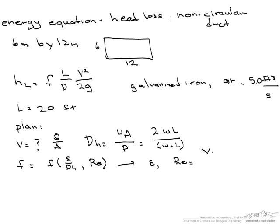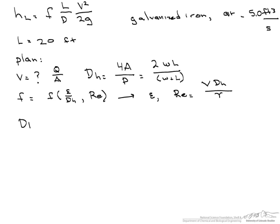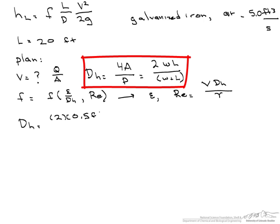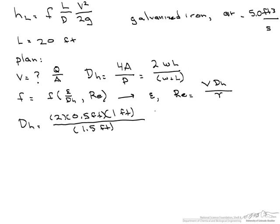which is the velocity times the hydraulic diameter divided by the kinematic viscosity. First, we will find our hydraulic diameter, which is 2 times 0.5 feet, which is our 6 inches, times 1 foot, which is our 12 inches, divided by 0.5 plus 1, or 1.5 feet. And that ends up being 0.67 feet.